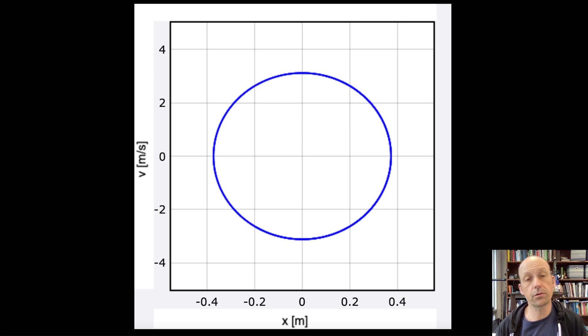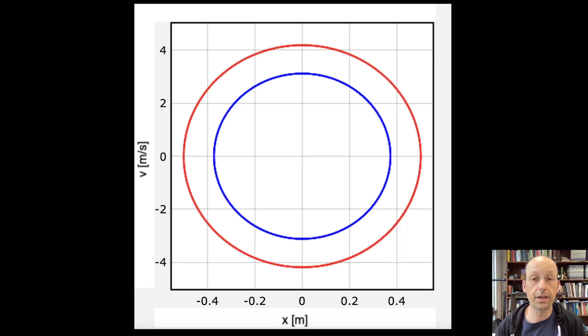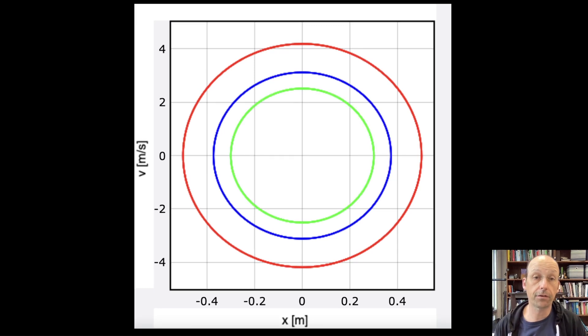Oh, here's the different energies. So here's one energy. As I increase the energy, it looks like this, right? Because it has a larger amplitude, and it goes faster, and it goes further away. If I have a smaller energy, it looks like that.